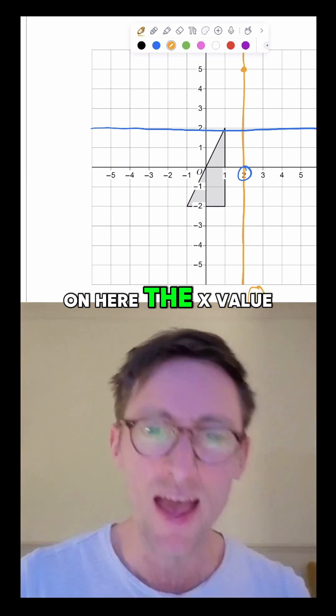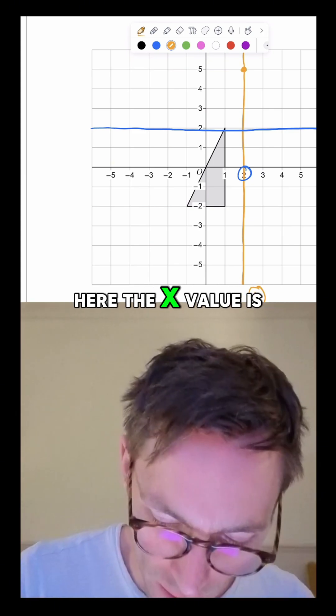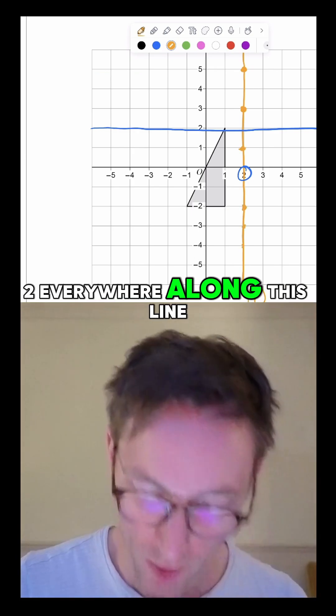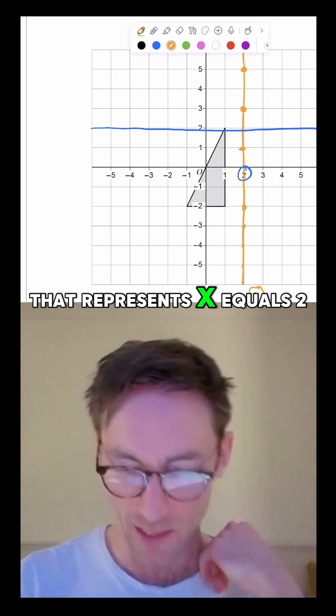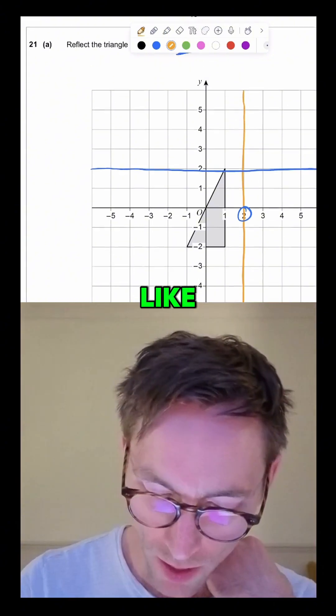Here the x value is 2, here the x value is 2, the x value is 2 everywhere along this line. And so that's the line that represents x equals 2. But the trick is that it's the most common mistake in this question.